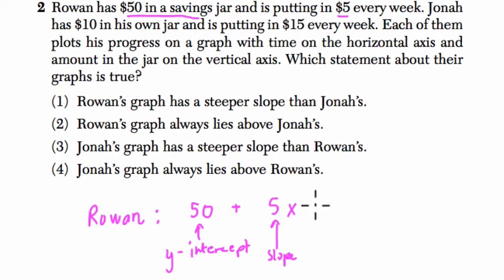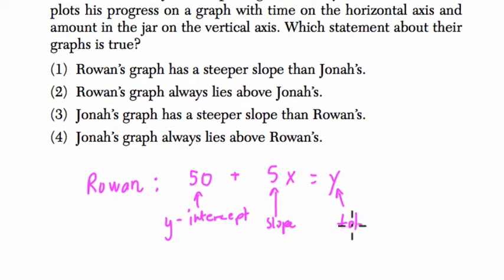And this total amount gives us how much Rowan has in his bank account. That'll be y, the total amount of money. And w is the number of weeks. This is for Rowan. And there's another person, Jonah.